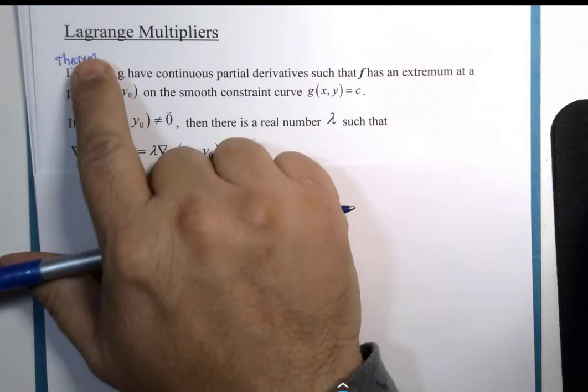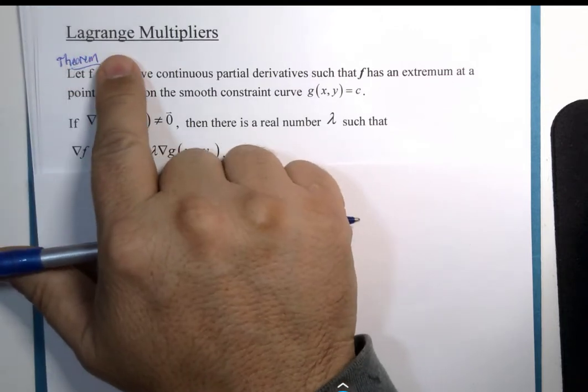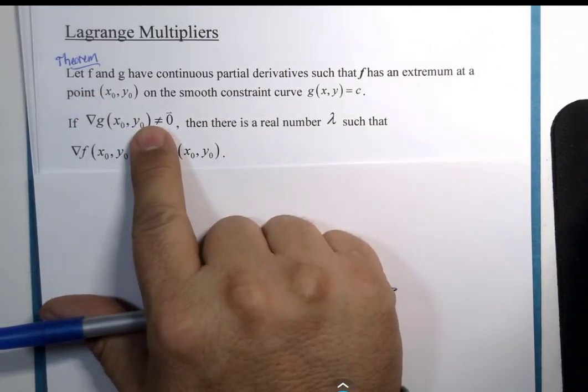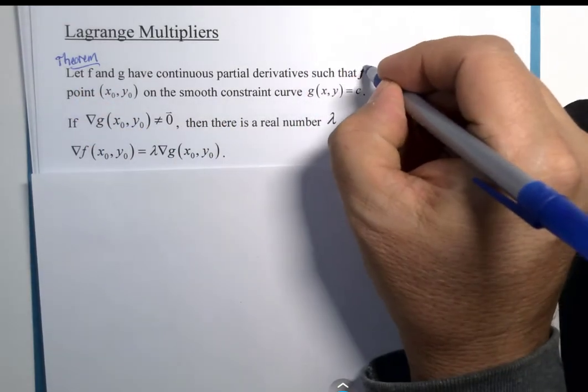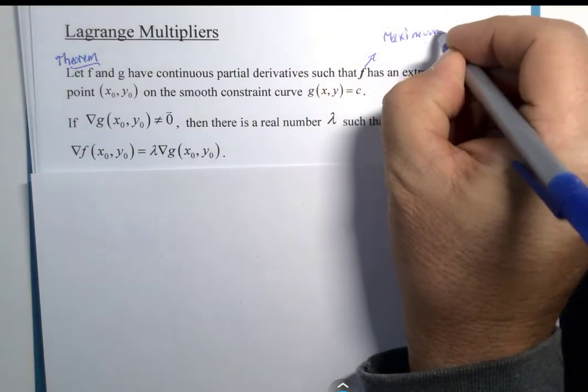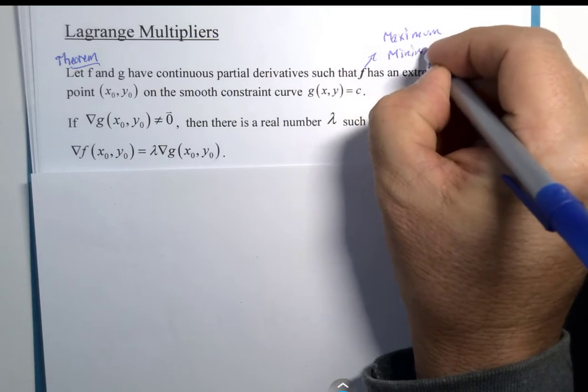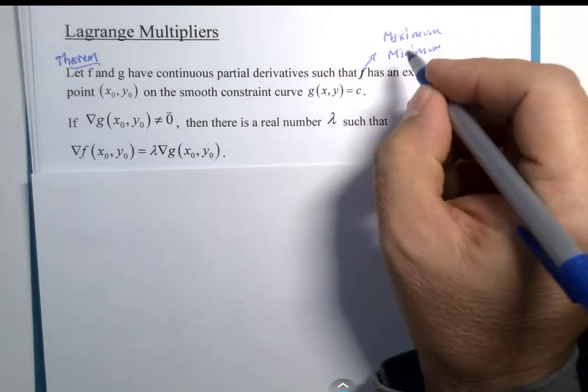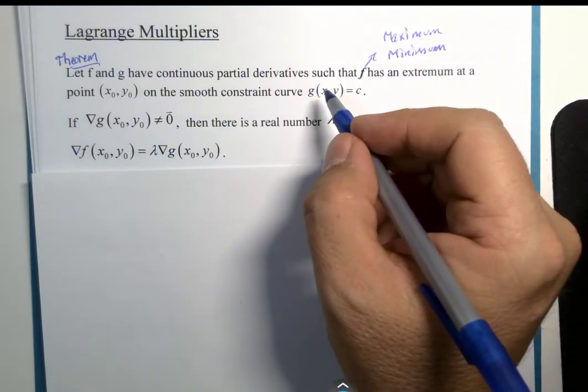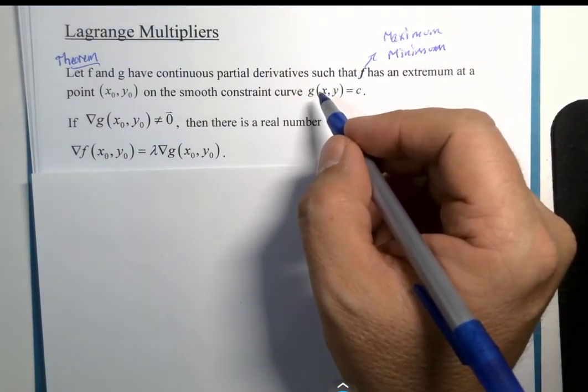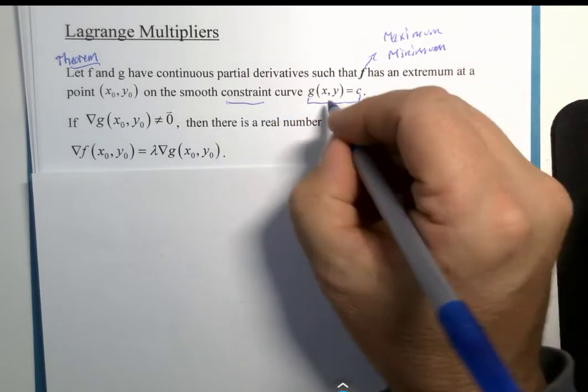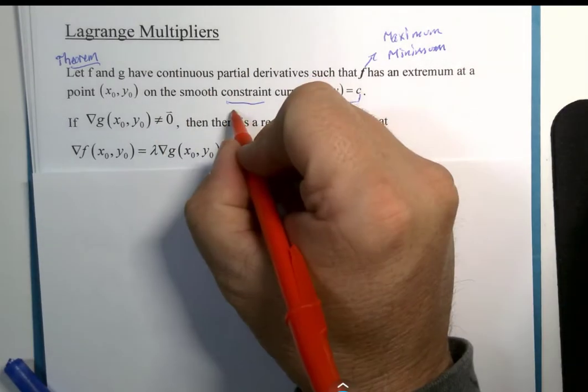The algebra we're going to do is called the Lagrange multipliers. The theorem says if you've got two functions and one of the functions we're trying to find either the maximum or the minimum, and it has a condition - they call this a constraint but you could also call that a condition.